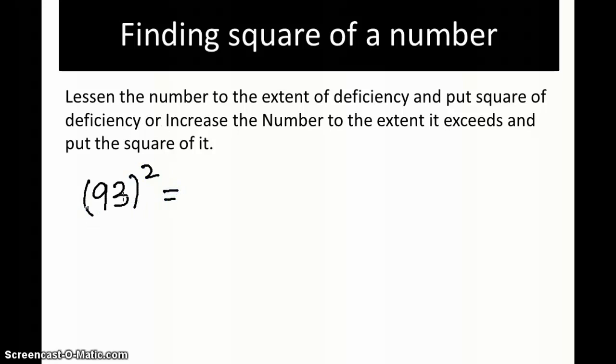The deficiency from the base is 7, so 93 minus 7 comes to 86. Then put the square of the deficiency: 7 squared is 49. That's the answer: 8649.